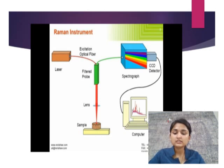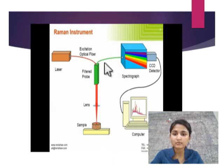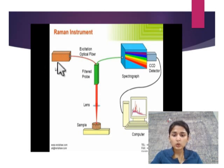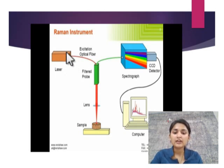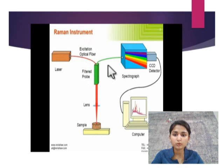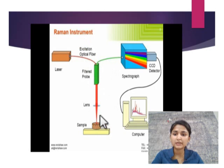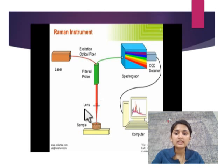Let's take a look at the Raman instrument. This is a Raman instrument. This is a laser light — the laser plays the role of a light source, which is used to produce the incident light. This light source should be monochromatic, meaning of a single color, single frequency, and single wavelength. And this is a filter probe. The second principal component is the lens — we can also use a prism or mirror in its place.